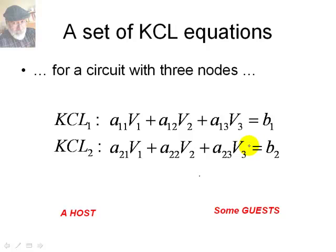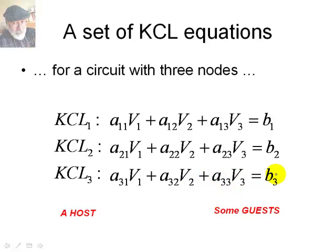Now for the third node, we write KCL3. In KCL3, again, the equation has the same shape. A coefficient times V1 plus another coefficient times V2 plus a third A33 coefficient times V3 equals to an independent number. In this case, you tell me. Who is the owner of the equation? Of course, it's node 3. Who is the host? V3 is. Who are the guests? You got it right, V1 and V2. Remember the concepts host and guest. We are going to use them.